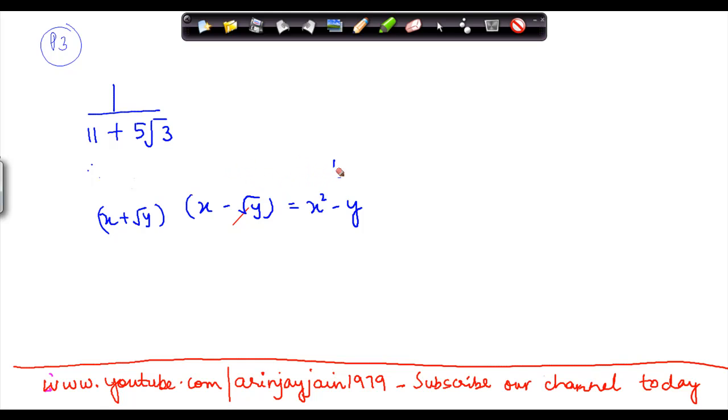Now what do we have here? If you do a comparison, I have x plus under root y. How do I rationalize this? Just like I did it in my earlier examples, I need to somehow multiply this number by x minus under root y.